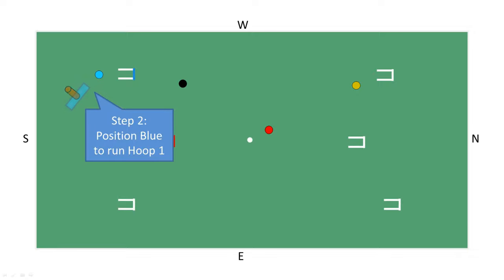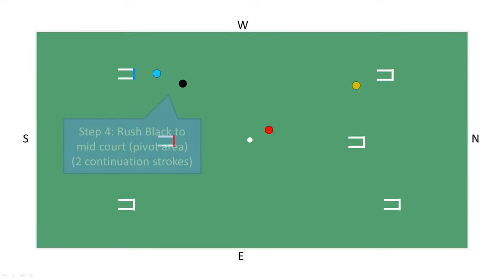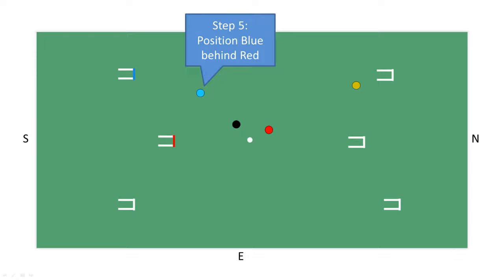Having won two continuation strokes, blue then takes a hoop running position in front of hoop 1. Blue now runs hoop 1 and gains one continuation stroke. Blue now rushes black to a pivot position in the centre of the court. Blue now has two continuation strokes.